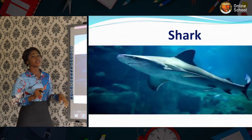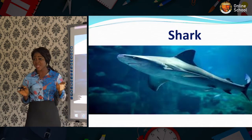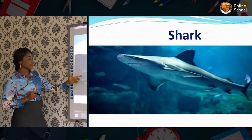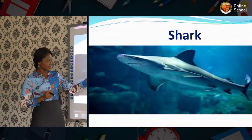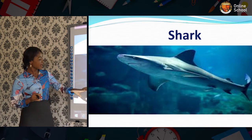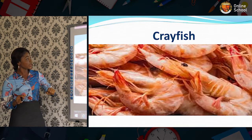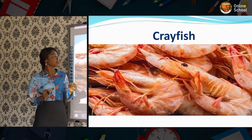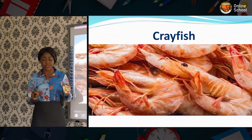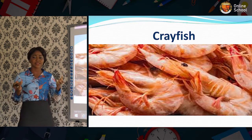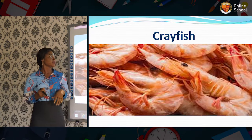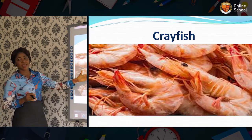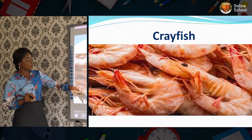The third one is shark. Have you ever seen a shark before? If you have not, look at it here — look at the picture. It lives in water. Is that clear? Are you following? The next one is crayfish. Many of us, our parents, mommy, use crayfish. And they live where? In water. Look at the picture here. I guess you're following.